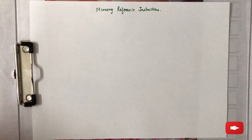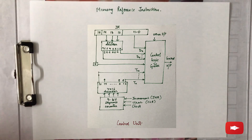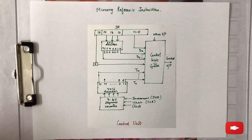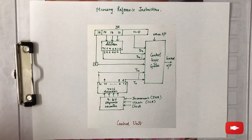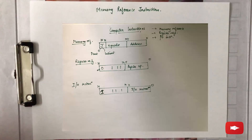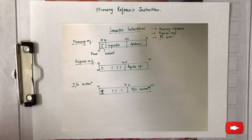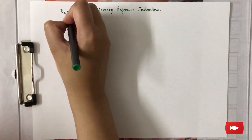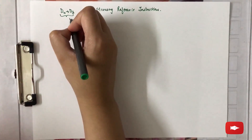The topic for this video is memory reference instructions. In the diagram of the control unit of a computer, the 12th, 13th, and 14th bits of an instruction enter into a 3x8 decoder which produces d0 to d7 outputs defining different operation codes. If d7 was one, the instruction was either a register reference or input/output instruction. Otherwise, d0 to d6 values are for different op codes of memory reference instructions.